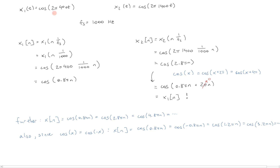Another way to look at this: if we define the normalized frequency omega-hat as the radial frequency divided by the sampling frequency, this normalized frequency omega-hat is 2π-periodic. This was not the case with continuous-time frequency because there was no integer n to cancel out multiples of 2π. With discrete-time samples, omega-hat is 2π-periodic, and samples from one signal cannot be distinguished from samples from another if they differ only by multiples of 2π in normalized frequency.